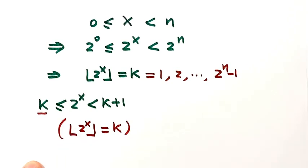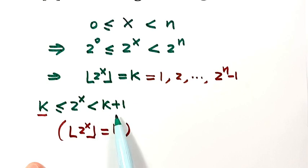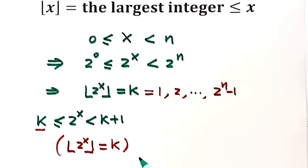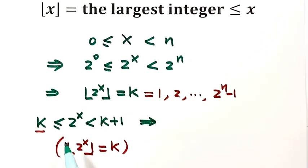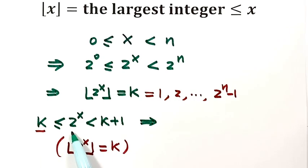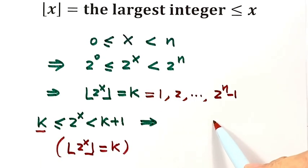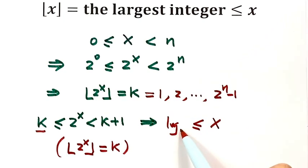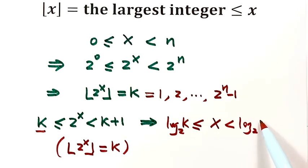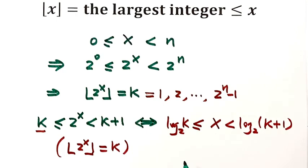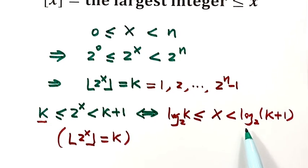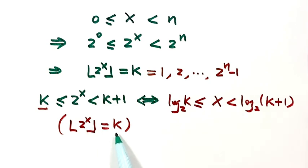We want to know the corresponding x values for this interval. We take a log with base 2 of each term, so we get x bigger than or equal to log base 2 of k, and less than log base 2 of k plus 1. It's easy to check these two statements are equivalent. So for x in this interval, the floor of 2 to the x equals constant k.